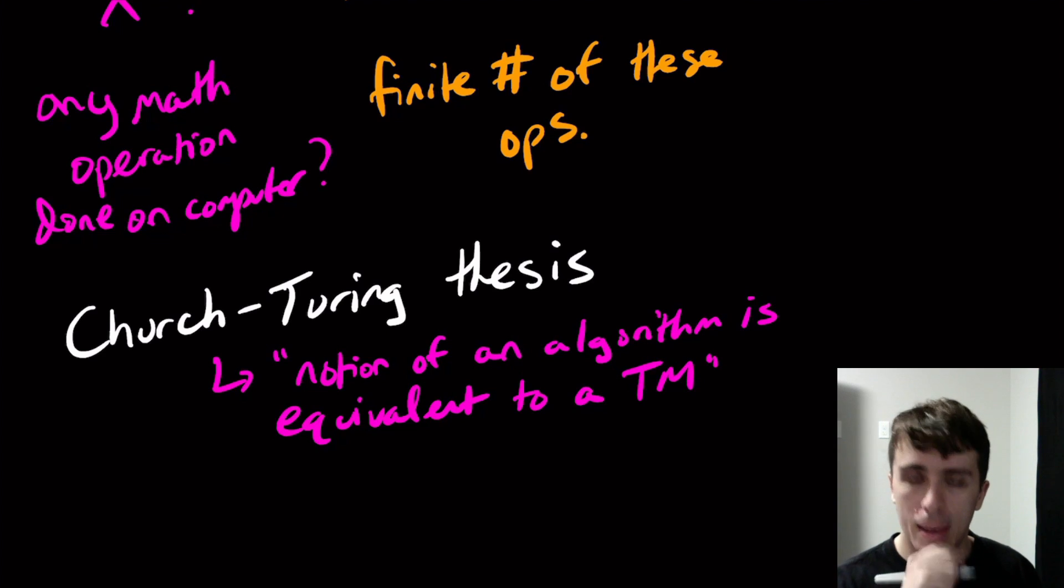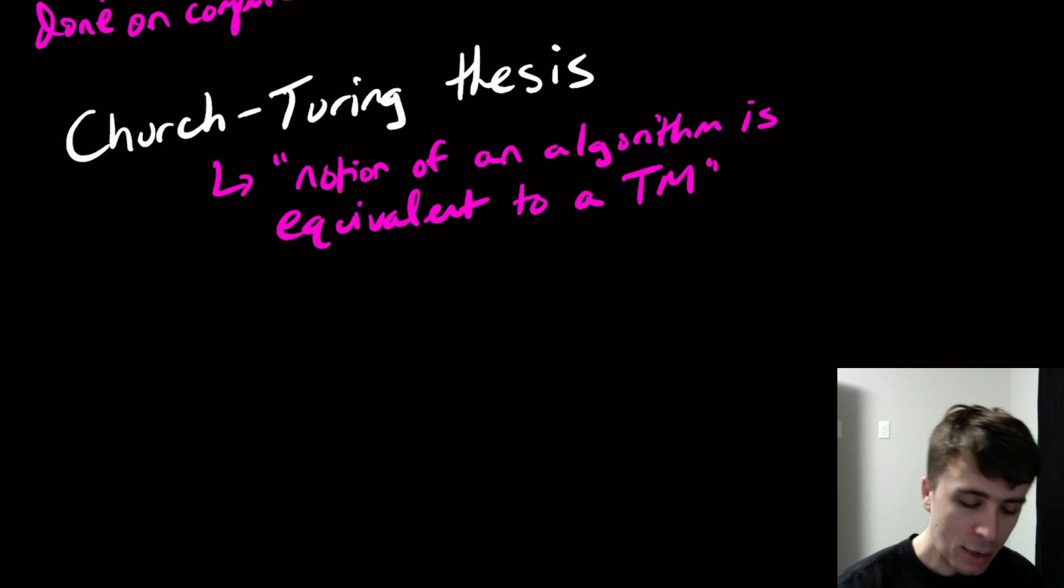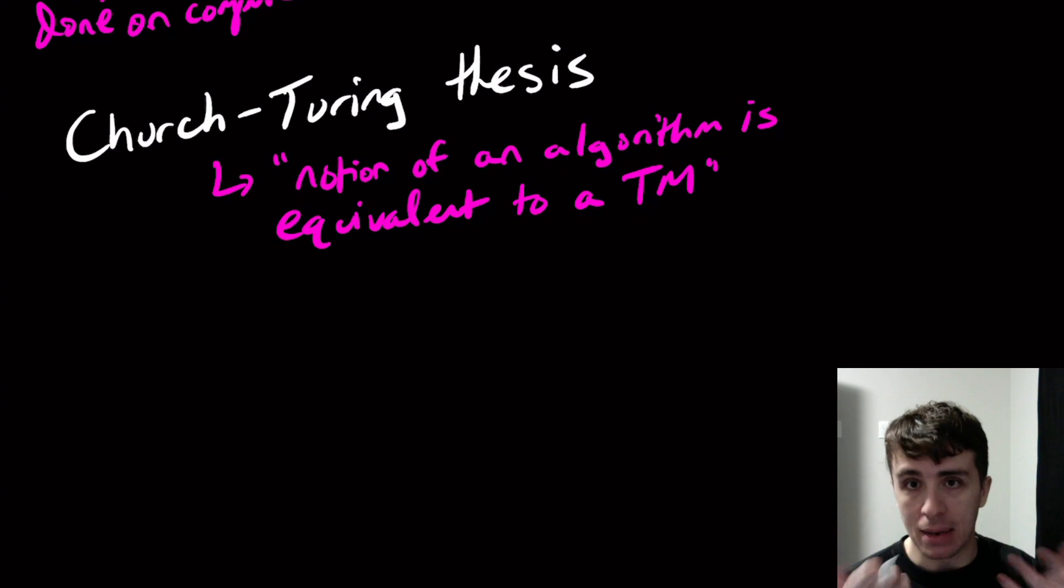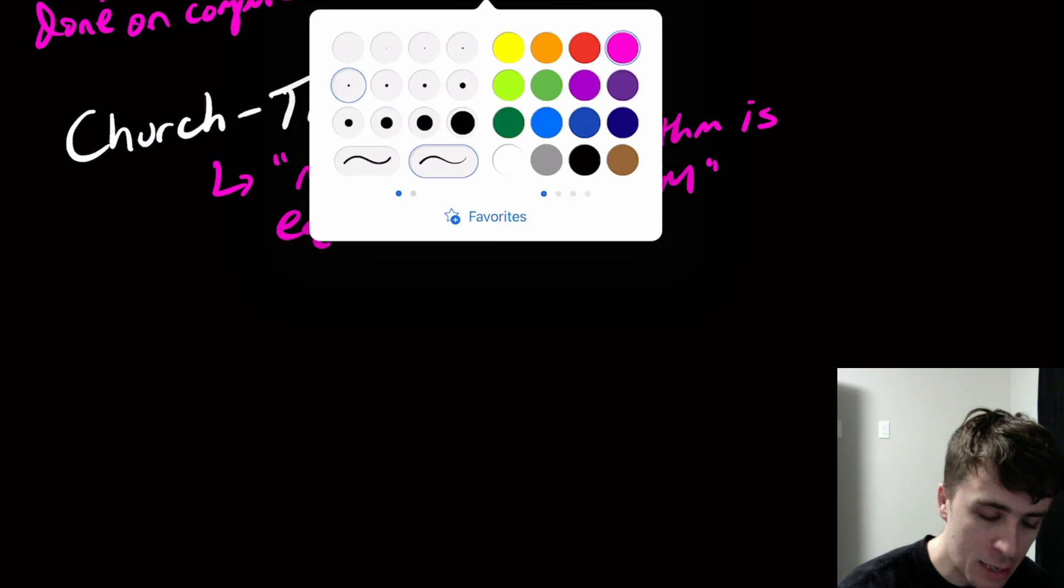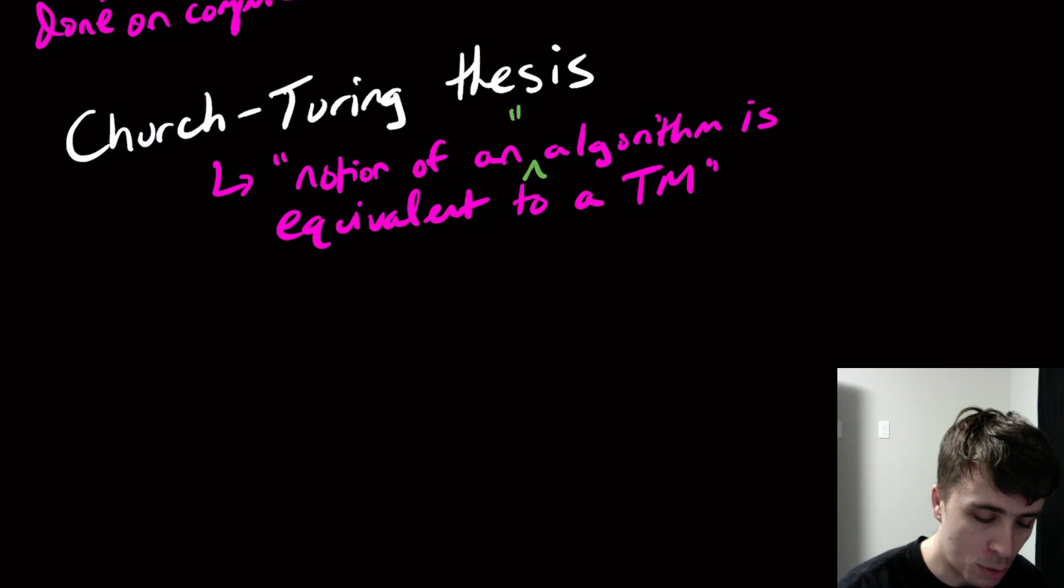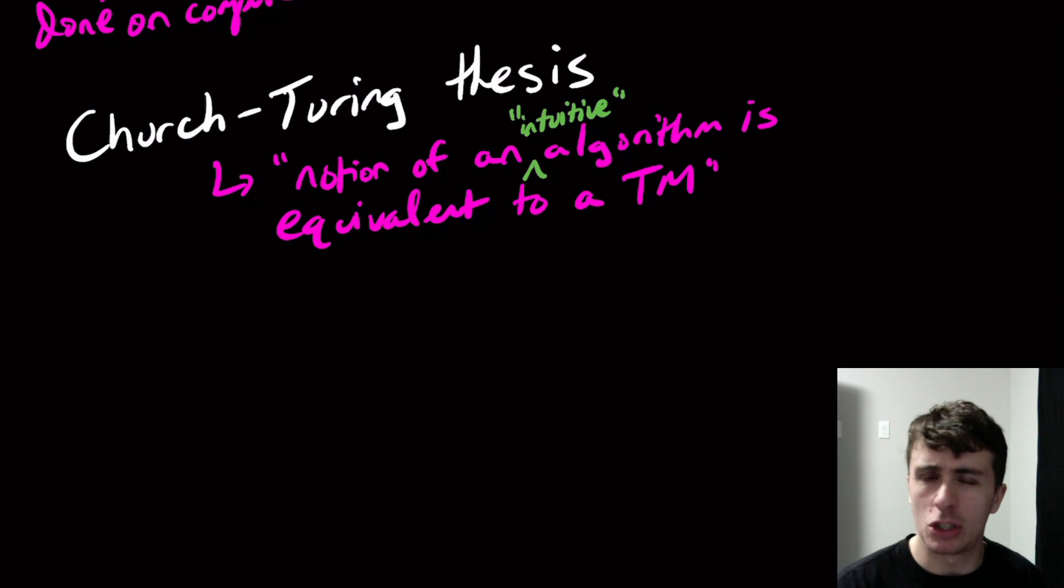What they effectively said is that the notion of an algorithm is equivalent to a Turing machine. This is actually pretty profound. We actually kind of did half of it already, which is that if we have any algorithm - and by algorithm, I mean an intuitive algorithm - any kind of intuition about what an algorithm is, that's effectively what a Turing machine is, or we can convert it into a Turing machine.